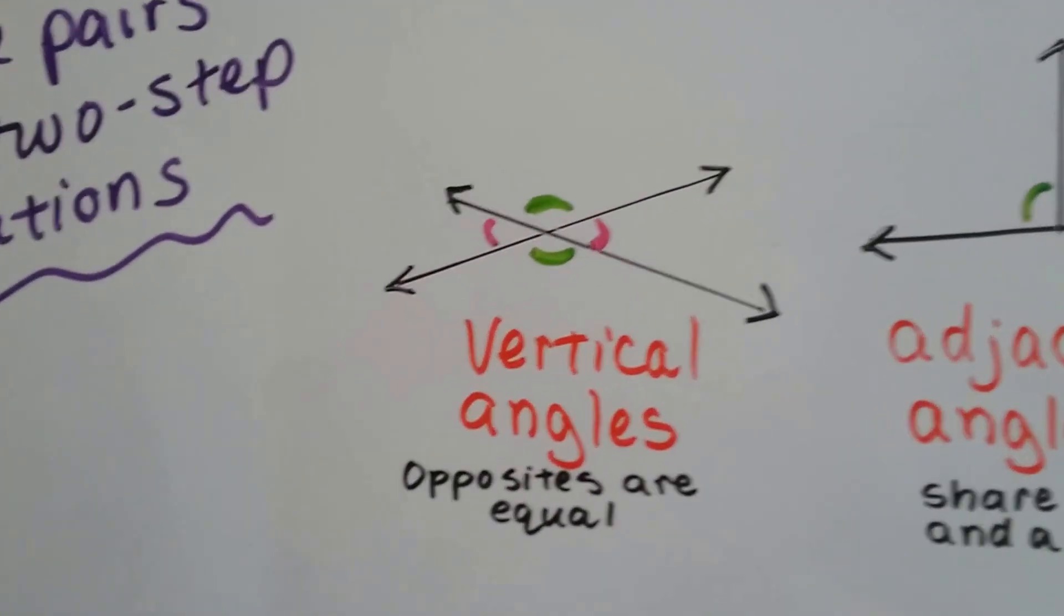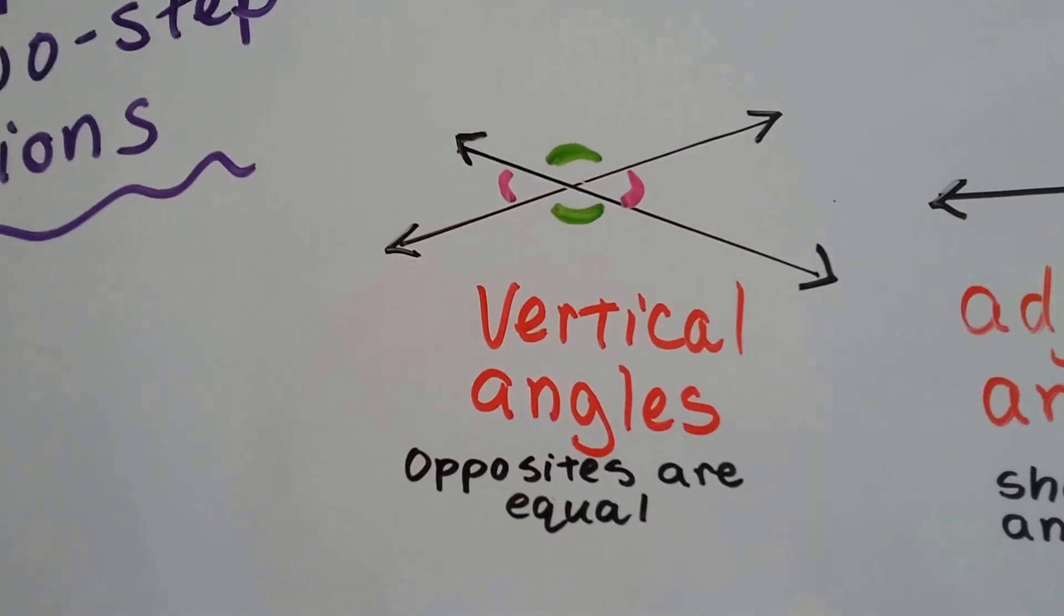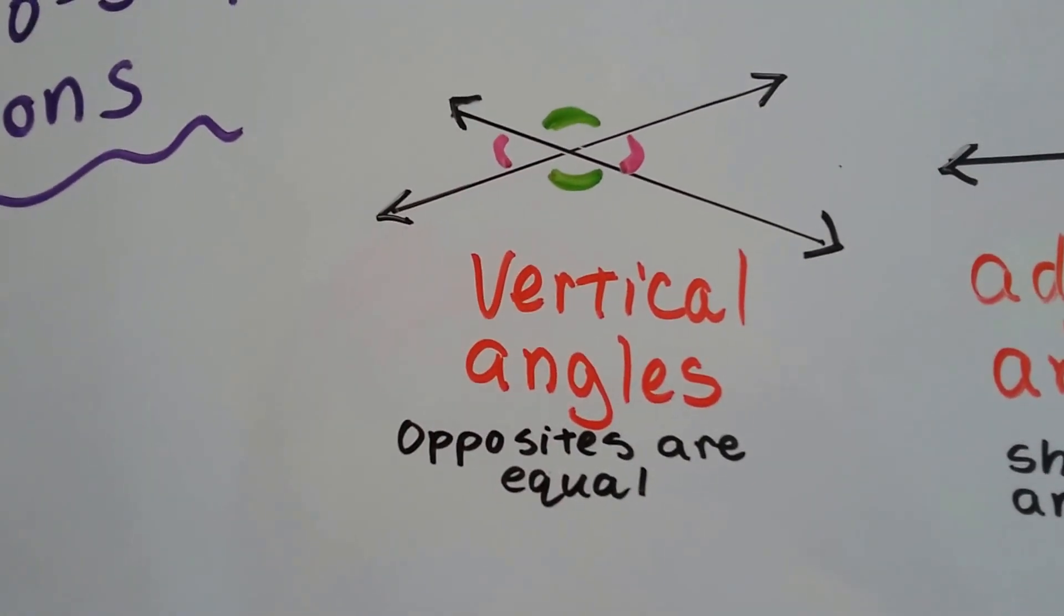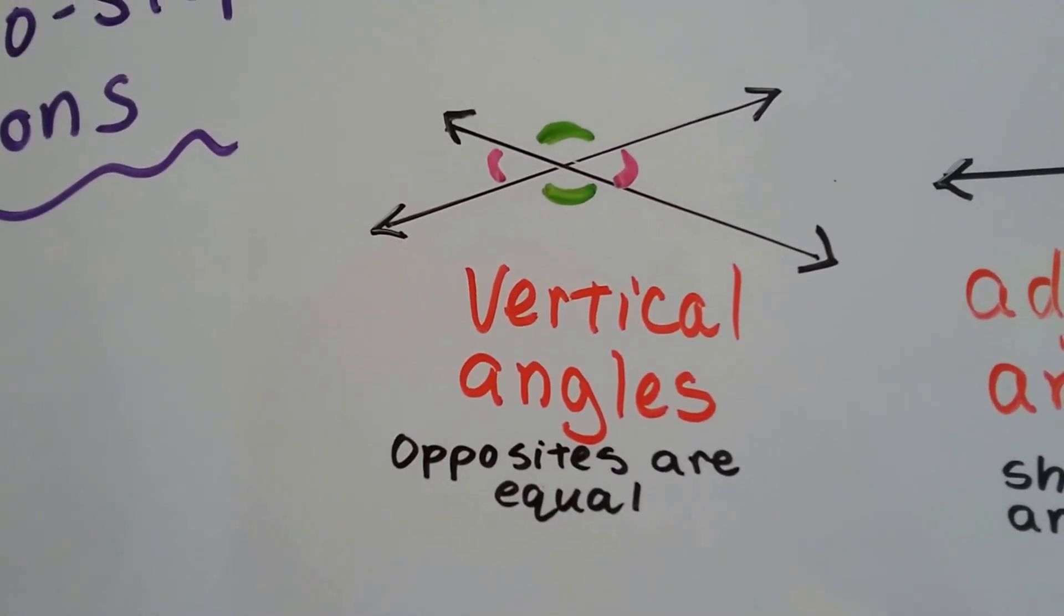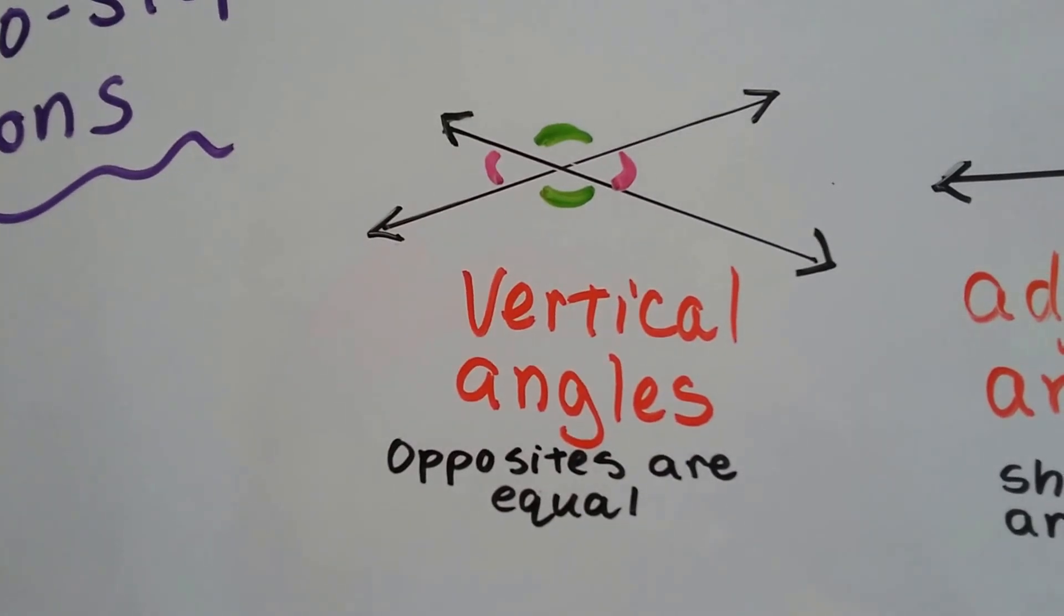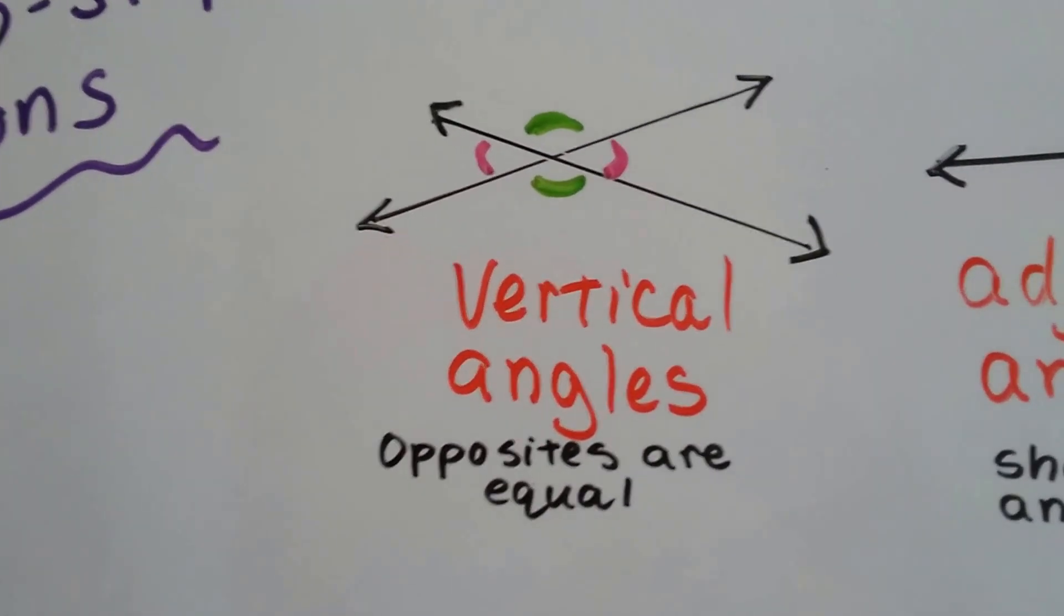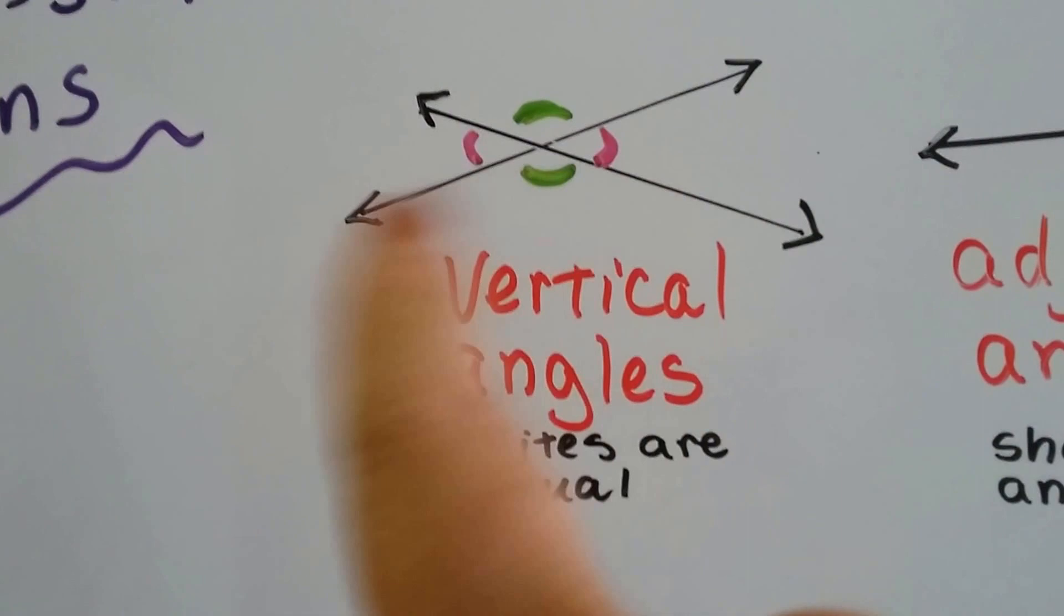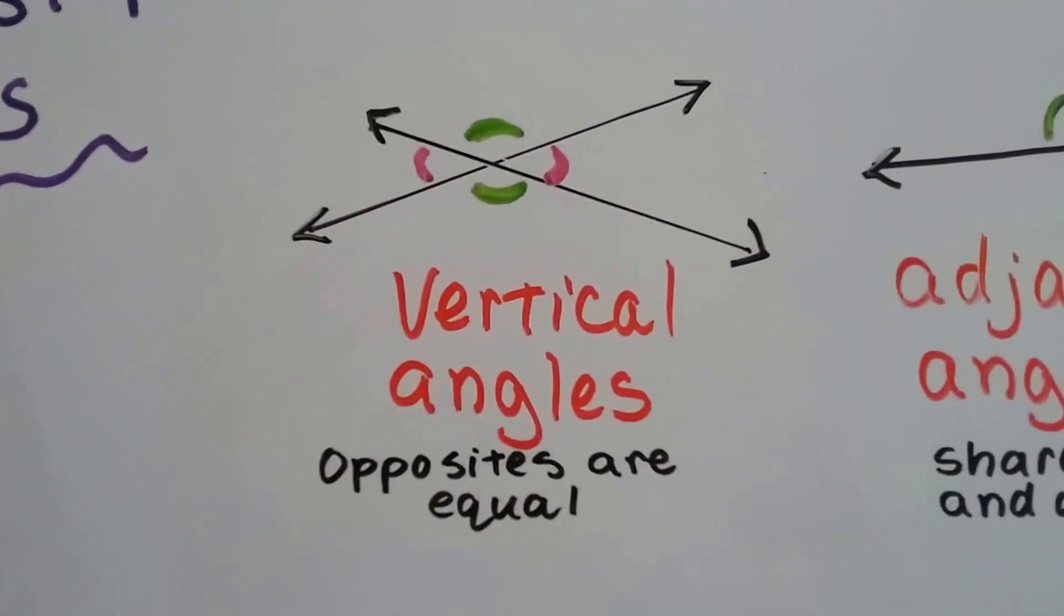We've been talking about vertical angles and how their opposites are equal. The green angles are vertical and the pink angles are vertical. The green angles each have the same measure and the pink angles each have the same measure because they're opposites of each other.